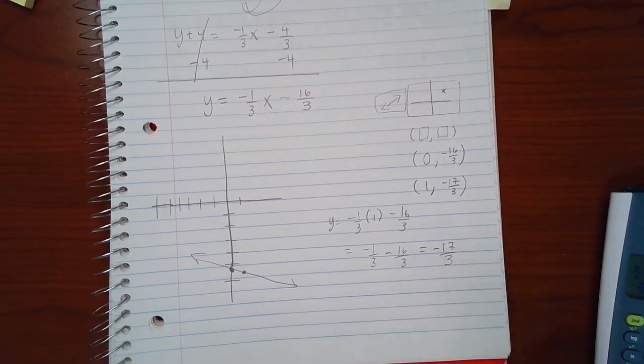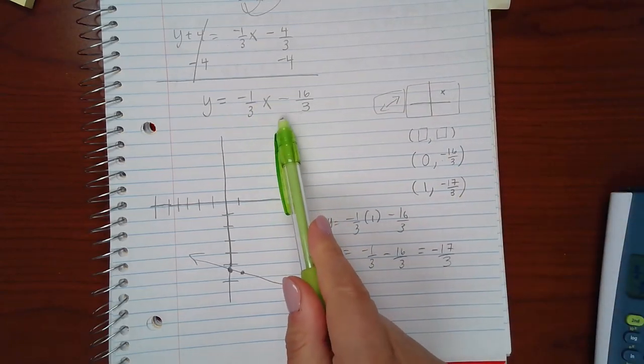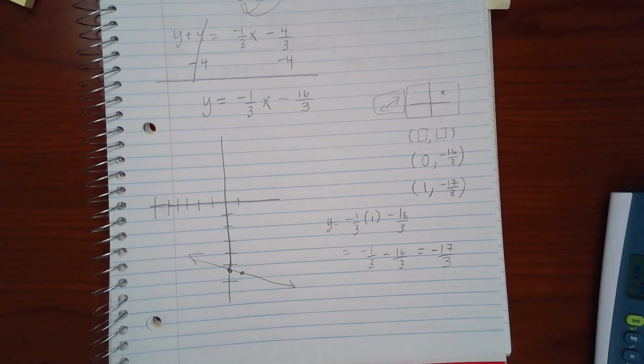But that is how you graph a line, even if it's given in a different form other than the slope-intercept form that we're used to. You just manipulate it, and you can still graph it.